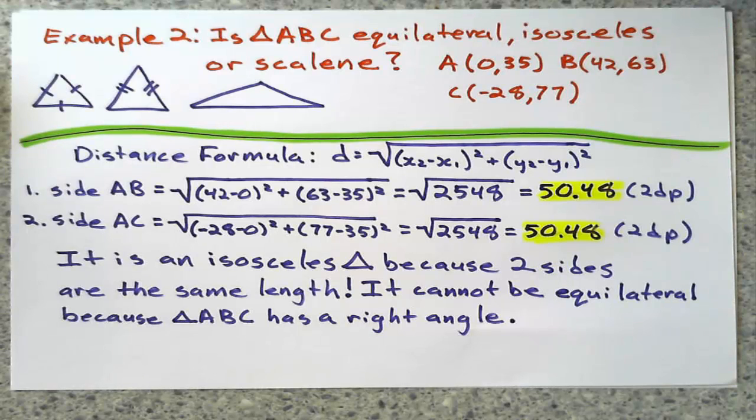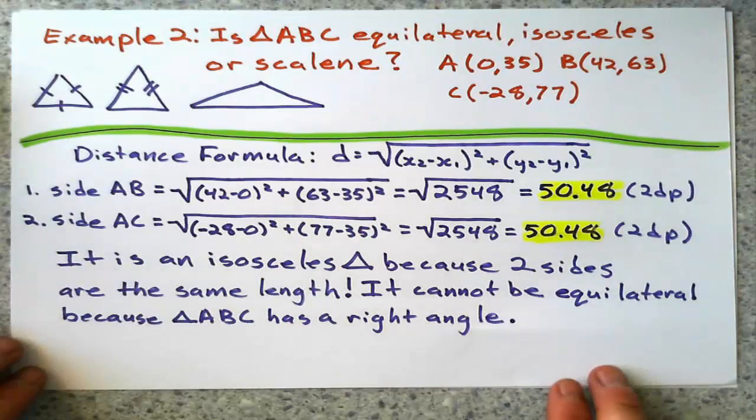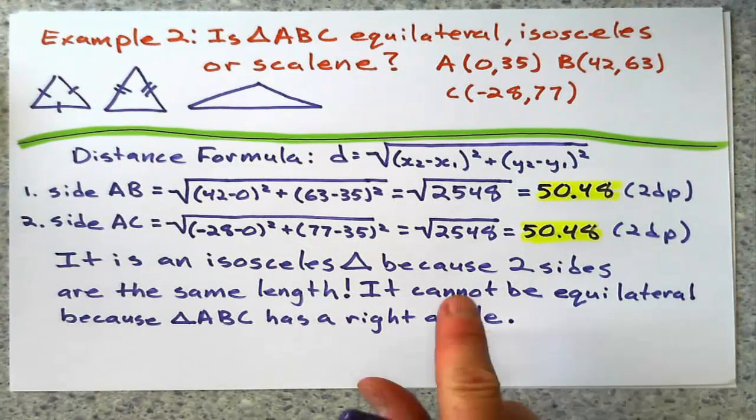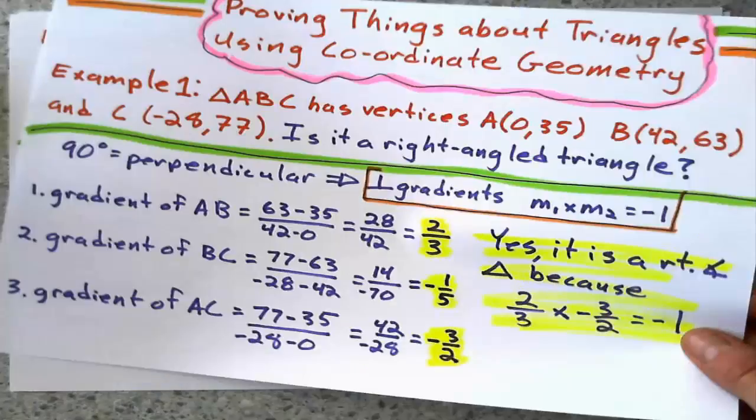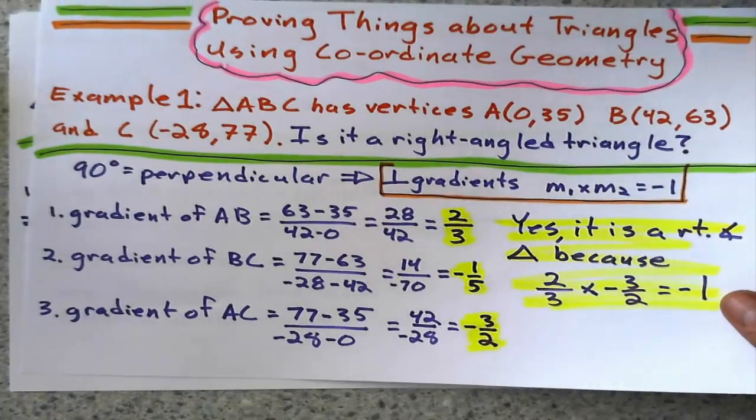So it's a nice isosceles right triangle. That's what triangle ABC would be there. And I did that using the distance formula and gradient.